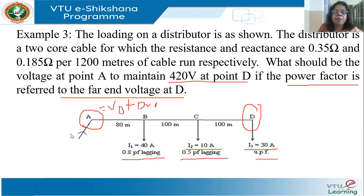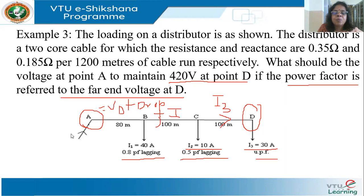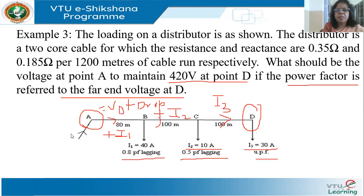You know why this is called a distributor? Because I have tappings in between. If it's a feeder, I will not have tappings. The current in section CD is I3, in BC it is I2 plus I3, and in AB it is I1 plus I2 plus I3. I have to determine what is I1, I2, I3 and the impedances of these sections, find out the voltage drop in them, add it to the receiving end voltage, and I will get VA.